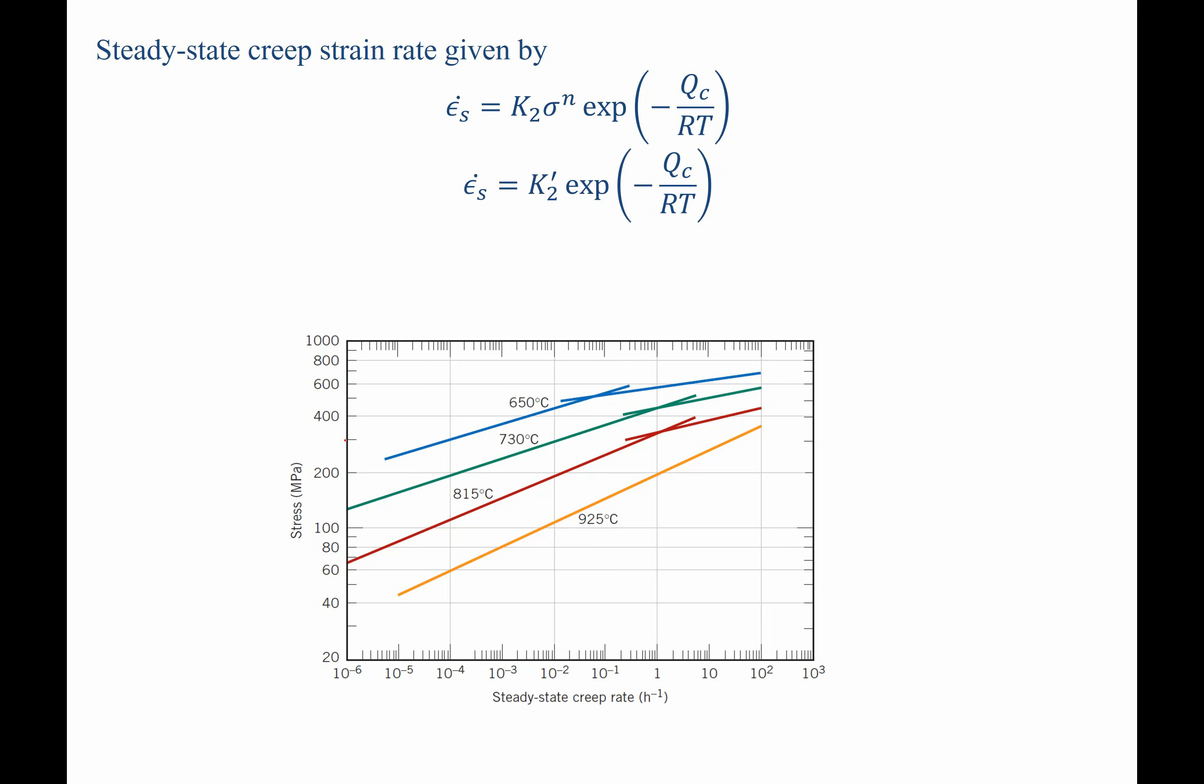Now, all we need to do is recognize where 300 megapascals is on this plot, draw a line across, and then see where it intersects the two temperatures, 650°C and 730°C. Looks like here and here. Conveniently, that corresponds to 10 to the negative 4th and 10 to the negative 2 per hour.